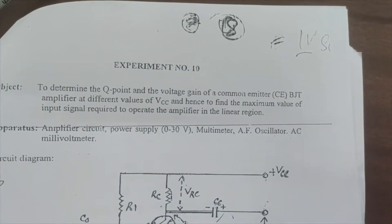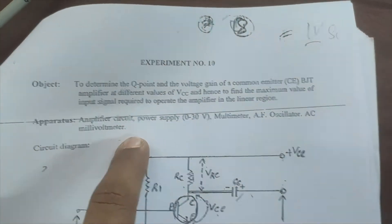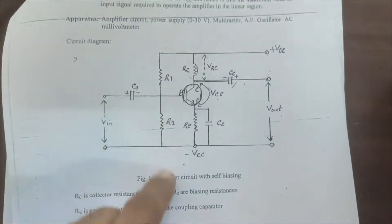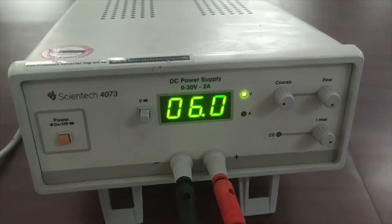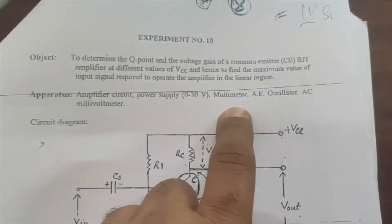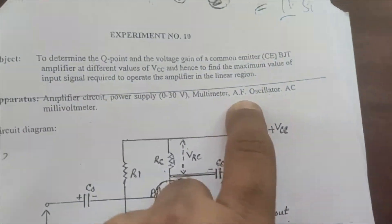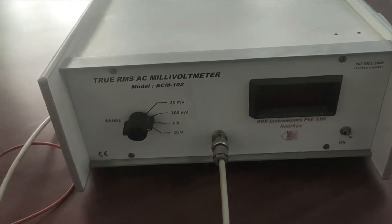We have to find the Q-point, and for this we need an amplifier circuit board. We also need a DC power supply, a multimeter, an audio frequency oscillator, and an AC millivolt meter.